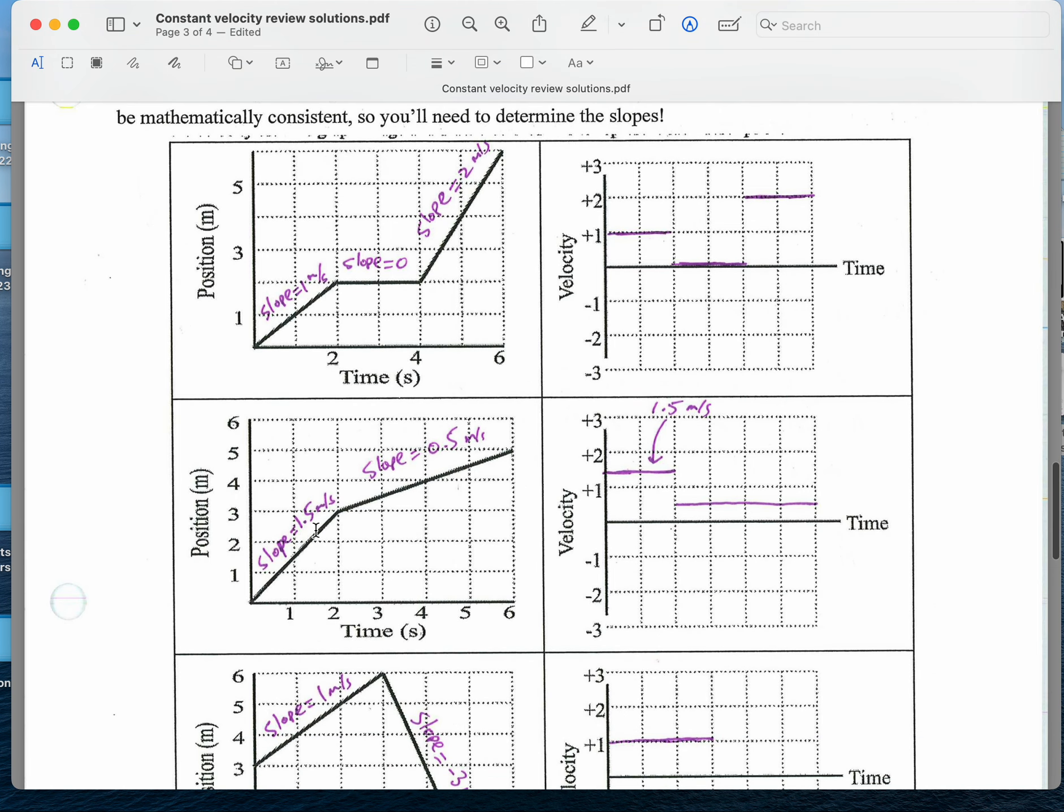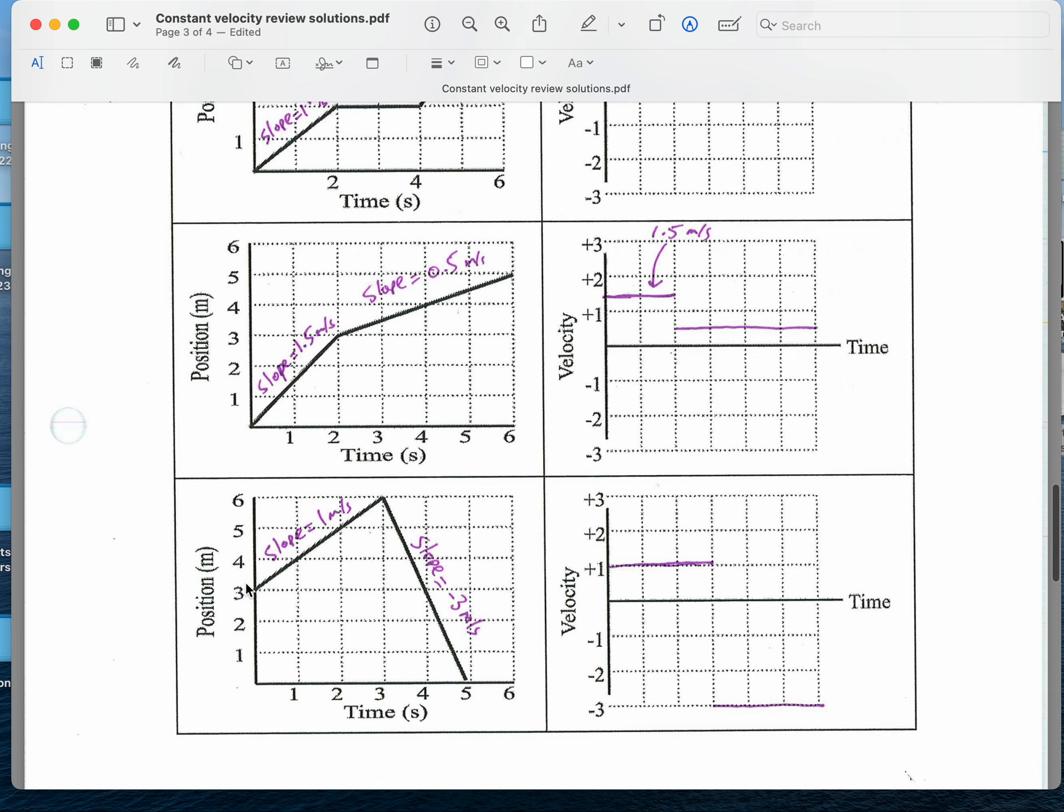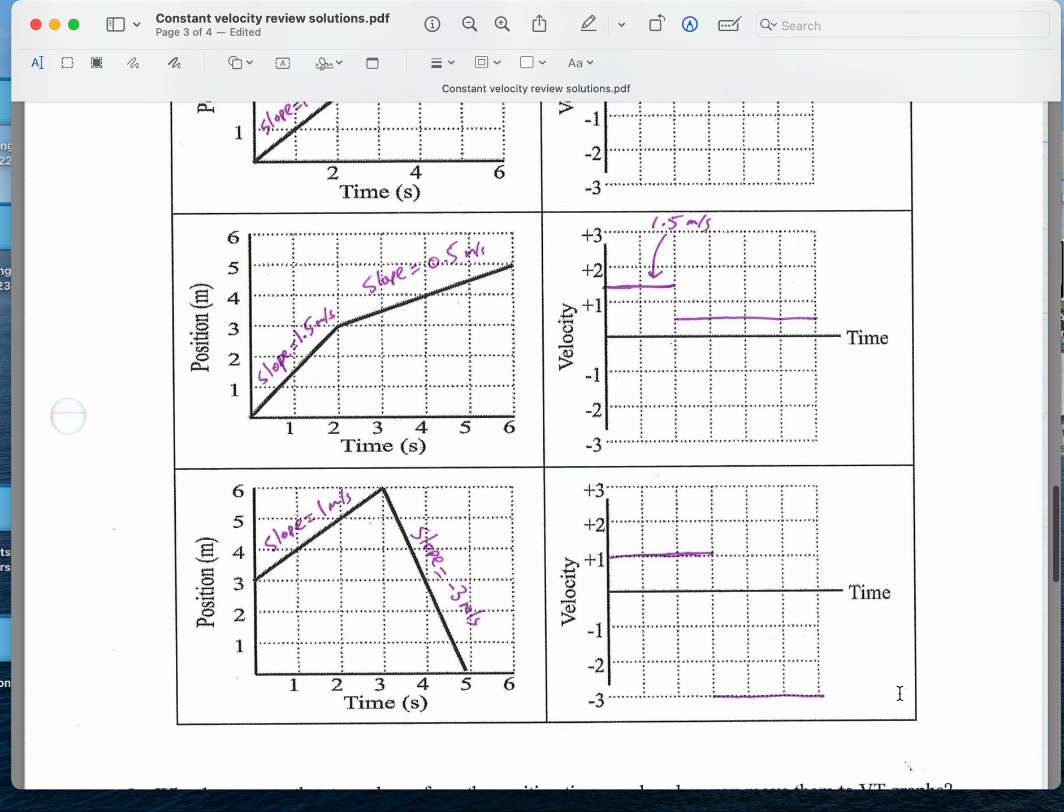Here, the slope is plus 1.5. You go up 3 over, divided by 2. Here, the slope was 0.5. You go up 2, divided by 4. So this is 1.5 meters per second, 0.5 meters per second. For this one, the slope of this part, you're going up 3 meters in 3 seconds. So the slope is 1 meter per second. Here, the slope is negative 3 meters per second because you're decreasing by 6 meters in 2 seconds. So my velocity is plus 1, and my velocity is minus 3.